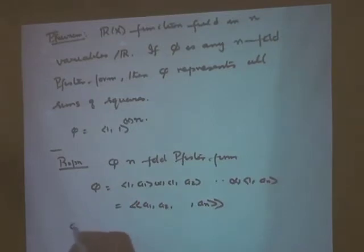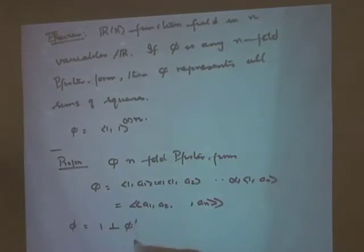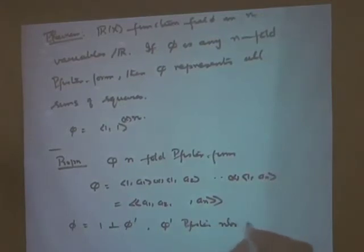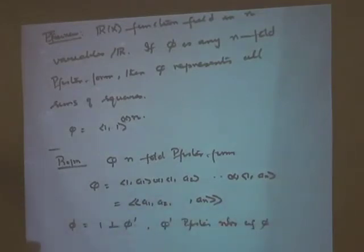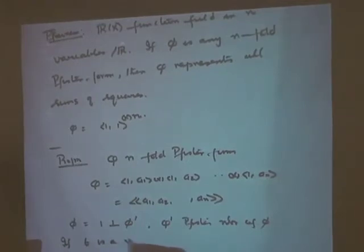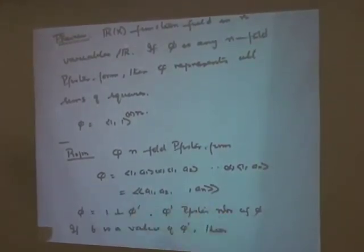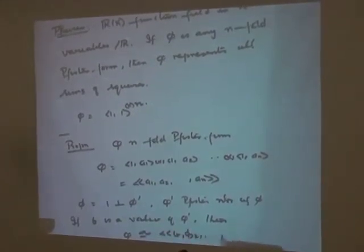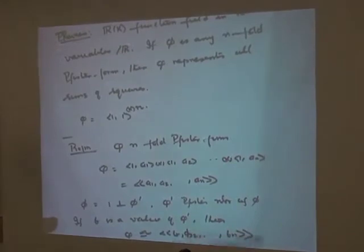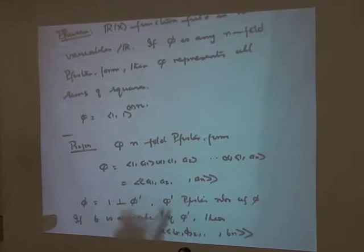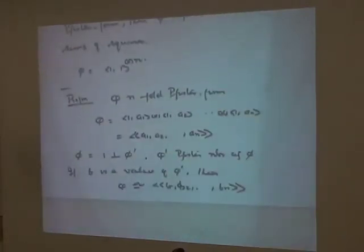The assertion is: phi always represents 1, so there is a Pfister neighbor — the orthogonal complement of 1. Call phi' the Pfister neighbor of phi. If b is a value of phi', then you can insert b into the Pfister form expression: phi can be written as ⟨⟨b, b2, ..., bn⟩⟩. The value can be interpolated provided it is a value of the Pfister neighbor of phi — whatever is represented by the orthogonal complement of the form phi.